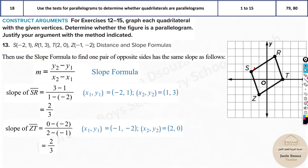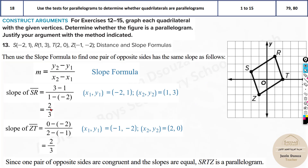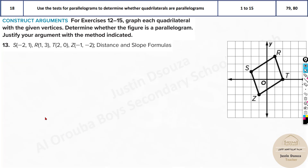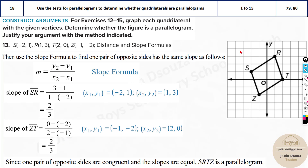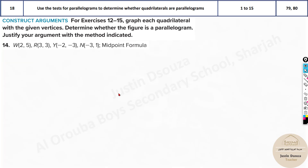Only if the lines are congruent and have the same slope are they parallel — then it's a parallelogram. If you find distance of SR and ZT but then find slopes of the other two lines, that's no use — you're not proving it's a parallelogram. Since one pair of opposite sides is congruent and has the same slope — meaning they are parallel and congruent — this is a parallelogram.